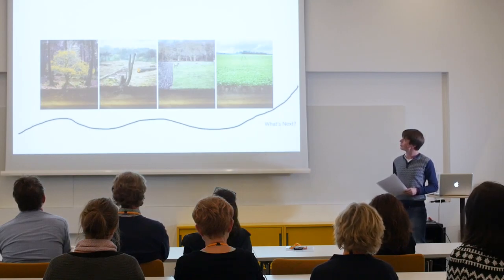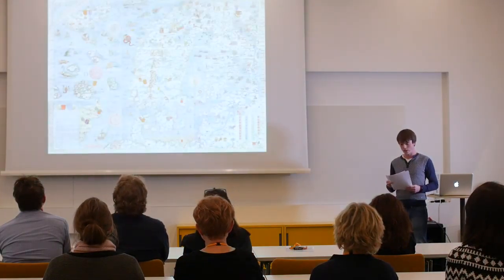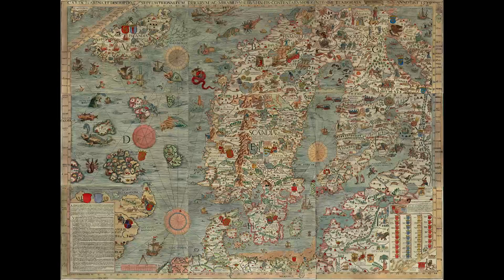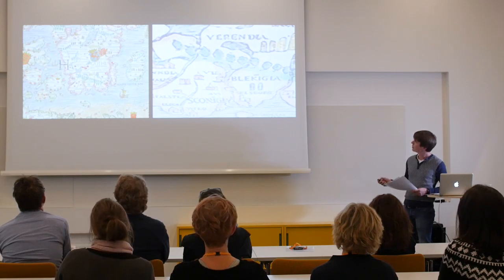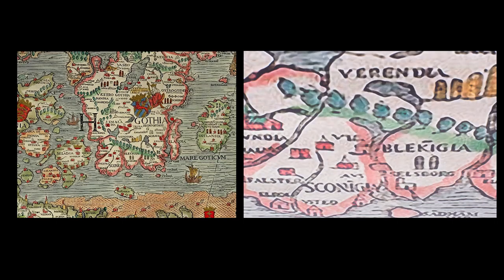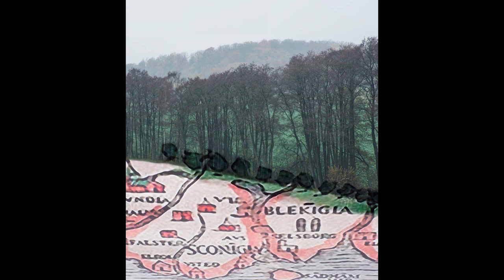Now let's get back to the idea of a forest. A forest can also be looked at differently. I stumbled upon this map — Magnus's map of Scandinavia from the year 1539. By that time, the whole of Skåne was part of the Danish Empire. I was mainly interested in this forest area. Here is Lund, so I guess it could be the Romeleåsen Ridge. I was more curious about what that forest would look like then, so I tried to create an image of that.